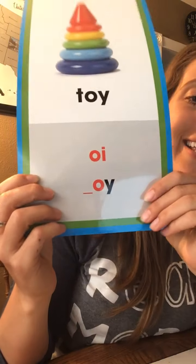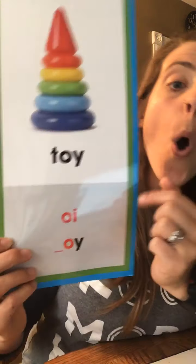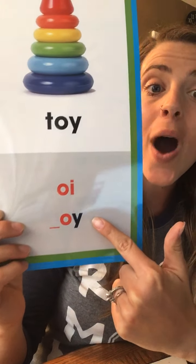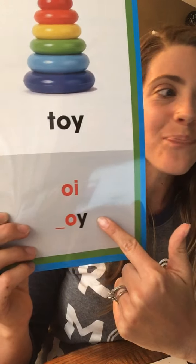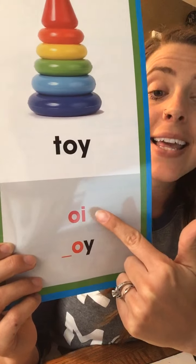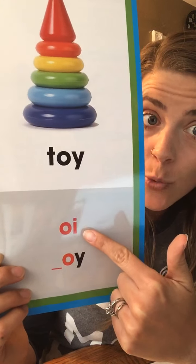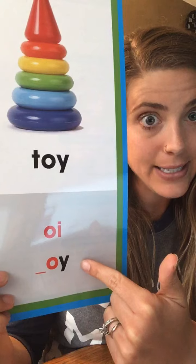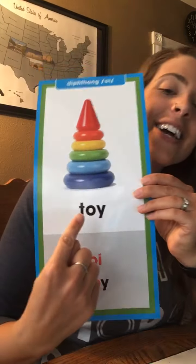So this week we are going to be learning about the OI sound. OI can be made with O-I and O-Y. When it's made with O-I, O-I is usually in the middle of the word. O-Y is usually at the end. But they both say OI. It's pretty fun — you want to try to say it with me? OI, OI, OI. Like toy.